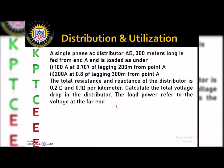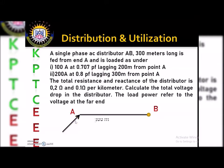We need to calculate the total voltage drop in the distributor. The load power factor refers to the voltage at the far end. So let's analyze the problem. A single-phase distributor AB is 300 meters long. The feeding point — the supply — is at end A. Based on the length of the distribution, supply is on the A side of the line. The total length is 300 meters, with one tapping 200 meters from point A.